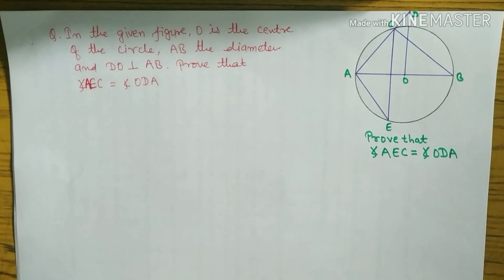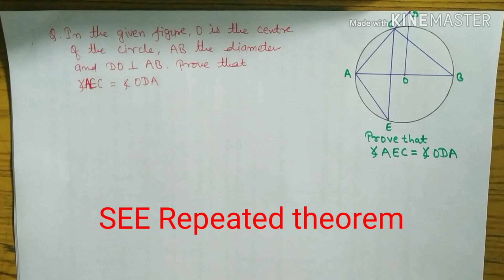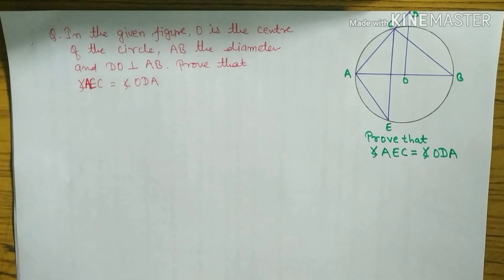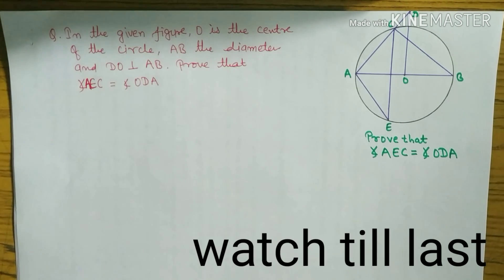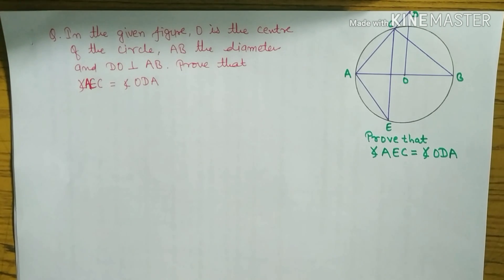Hello everyone, welcome to my YouTube channel. Today we have a geometry question which I took from the SE question bank. This question is repeated two or three times in the SE examination. This is question number 23 or 24 — an unseen theorem.